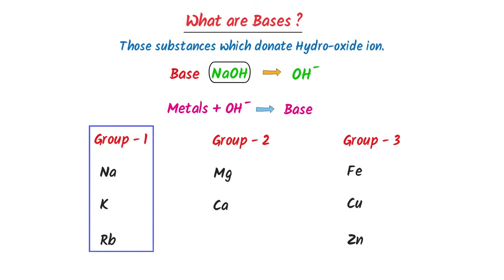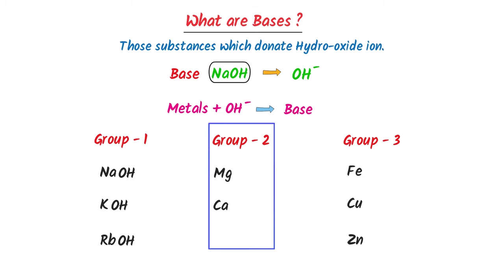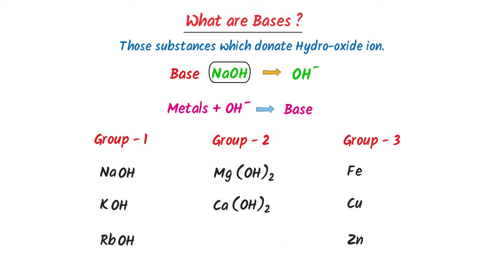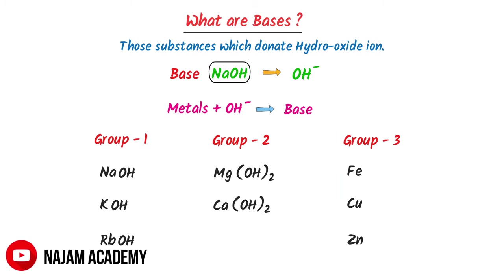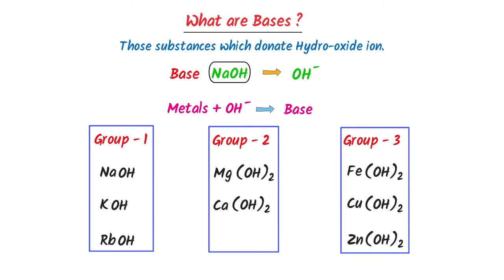With group 1 elements, I write one hydroxide ion — like sodium hydroxide, potassium hydroxide, rubidium hydroxide. With group 2 elements, I write 2 hydroxide ions — like magnesium hydroxide, calcium hydroxide. With group 3 elements, I also write 2 hydroxide ions — like iron hydroxide, copper hydroxide, zinc hydroxide. So all these metals containing hydroxide ions form important bases.